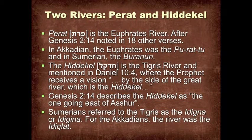As we discussed last lecture, two rivers — the Perat and Hedekl — are pretty straightforward. The Perat refers to the Euphrates River, mentioned 18 times after the initial description in Genesis 2. In the Akkadian, the Euphrates was the Peratu, and in Sumerian, the Buranun. The Hedekl is also well known and is mentioned in Daniel 10, where the prophet receives a vision standing on its banks. The Hedekl is also described in Genesis chapter 2 as going east of Ashur.